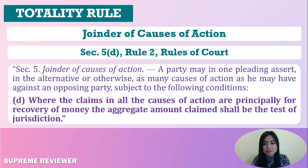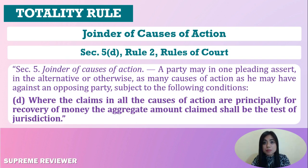The issue of whether claims shall be lumped together is determined by Paragraph D of Section 5 of Rule 2 of the Rules of Court. This paragraph embodies the totality rule as exemplified by Section 33 of BP 129, which states that where there are several claims or causes of action between the same or different parties embodied in the same complaint, the amount of the demand shall be the totality of the claims in all the causes of action, irrespective of whether the causes of action arose out of the same or different transactions.